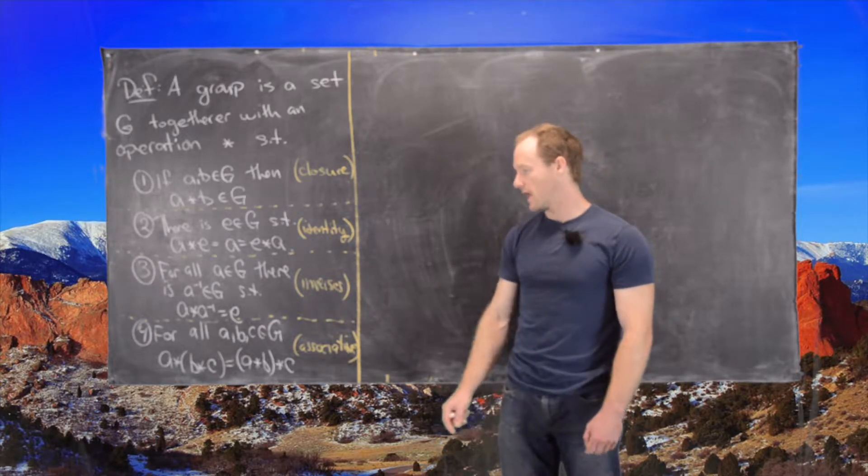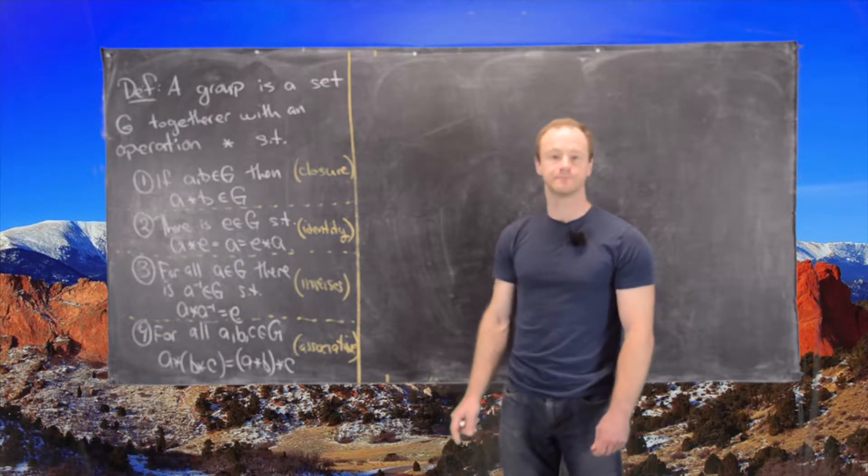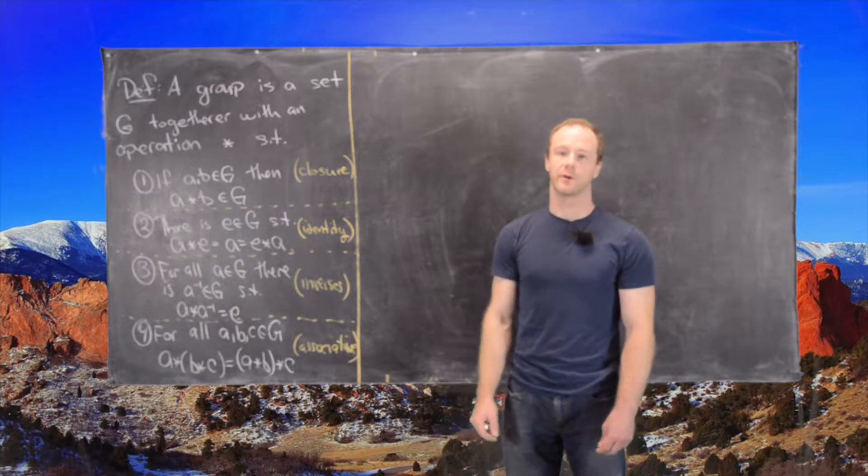And then for all A, B, and C in G, we have this associativity property. In other words, we can put parentheses wherever we want.